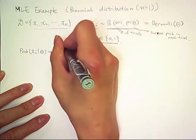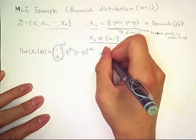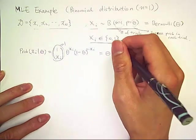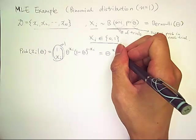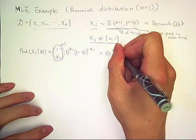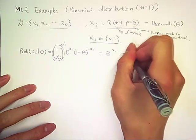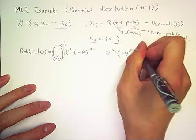And this is always 1. So we can simplify this to theta to the x sub i times 1 minus theta to the 1 minus x sub i.